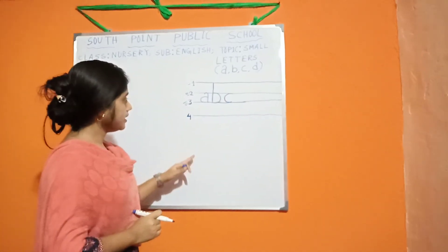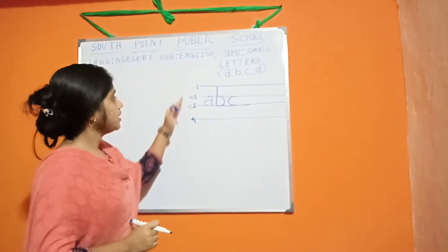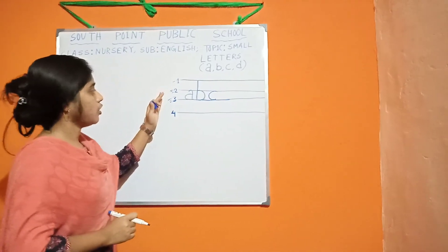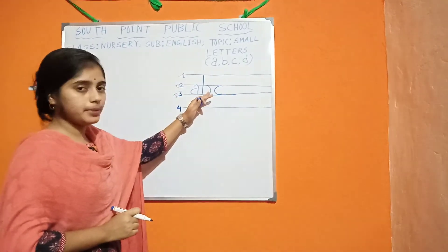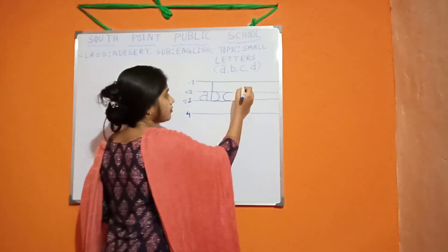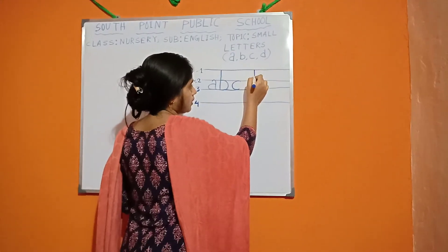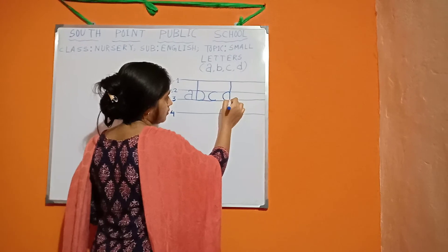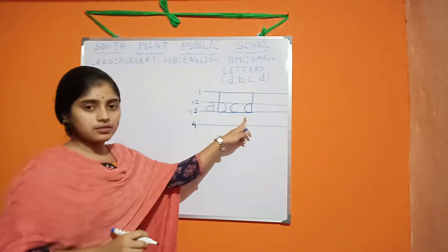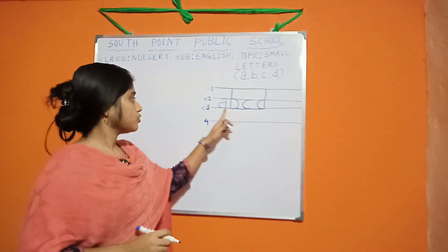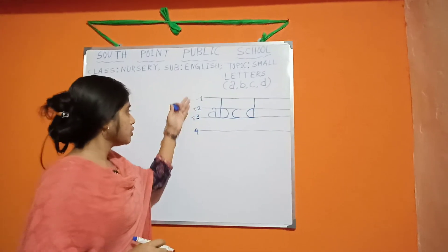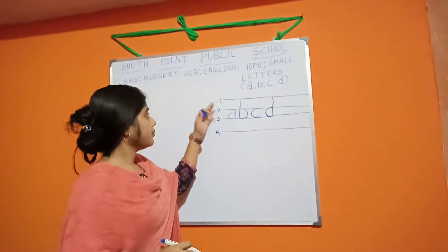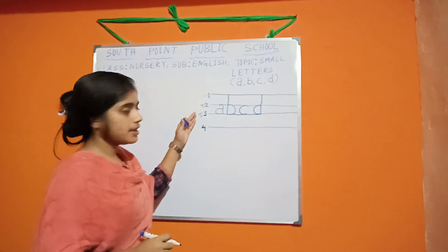And next D. To write D we need 3 rules: first, second and third, like B. This is D. To write A we need 2 lines. To write B we need 3 lines.